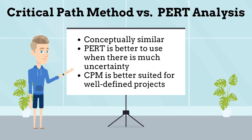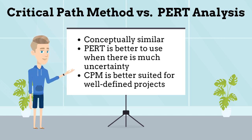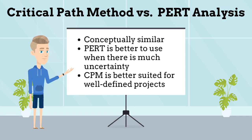What are the differences between the critical path method and PERT analysis? Although the critical path method and PERT are conceptually similar, some significant differences exist, mostly due to the type of projects best suited for each technique. PERT is better to use when there is much uncertainty and when control over time outweighs control over costs. PERT handles uncertainty of the time required to complete an activity by developing three estimates and then computing an expected time using the beta distribution.